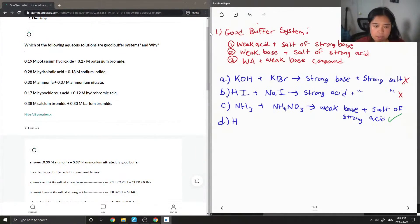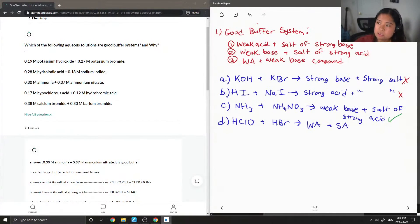So you have hypochlorous acid, as shown there, plus hydrobromic acid. So they're both acids, but the first one is a weak acid, and this is just a strong acid. So we can't use this as a buffer system.